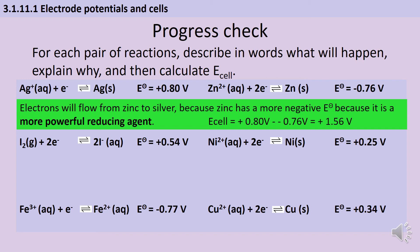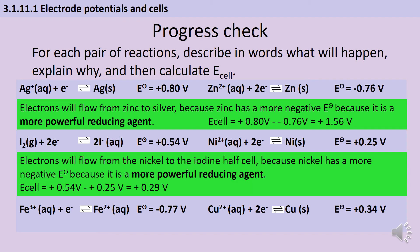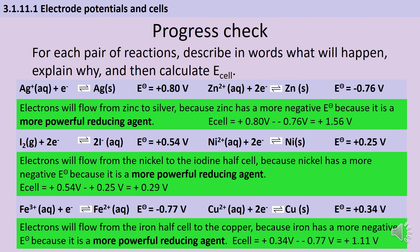For the next example we've actually got two positive standard potentials. Remember the electrons are going to move from whichever one is more negative or less positive to the other one, so here they flow from the nickel to the iodine half cell because nickel is effectively more negative — it's a more powerful reducing agent. The potential difference for that cell is +0.29. In the final example we're back to one positive and one negative, so electrons flow from the more negative value to the more positive value — from the iron half cell to the copper — because iron is a more powerful reducing agent. The potential difference for the whole cell is +1.11 volts.